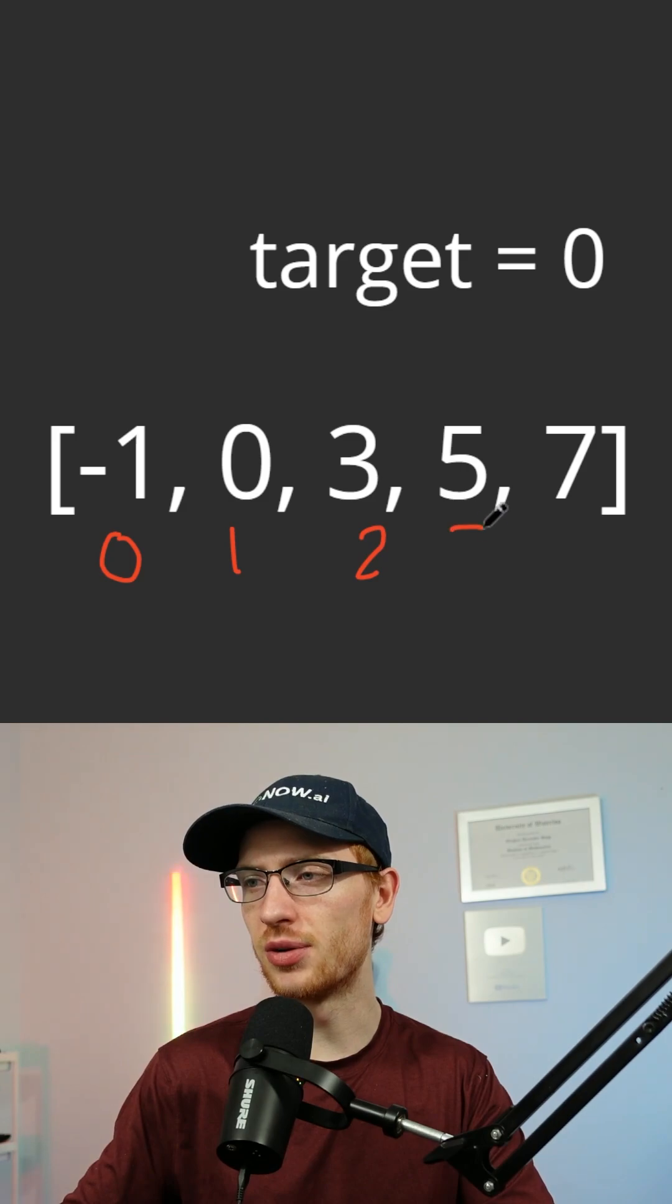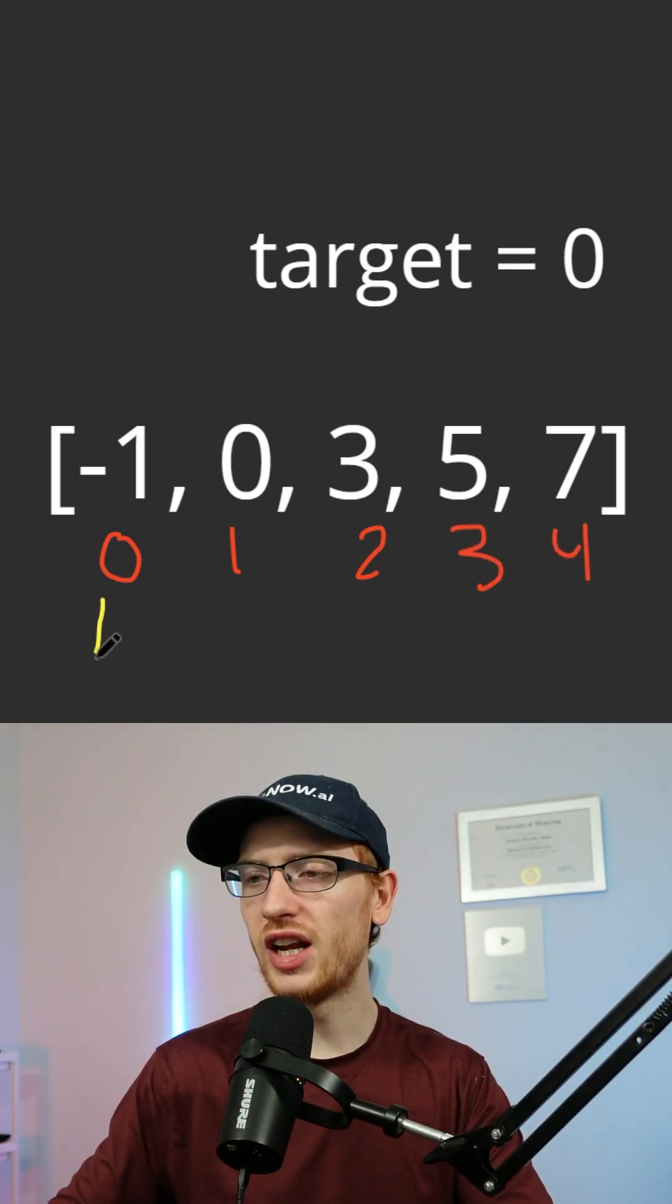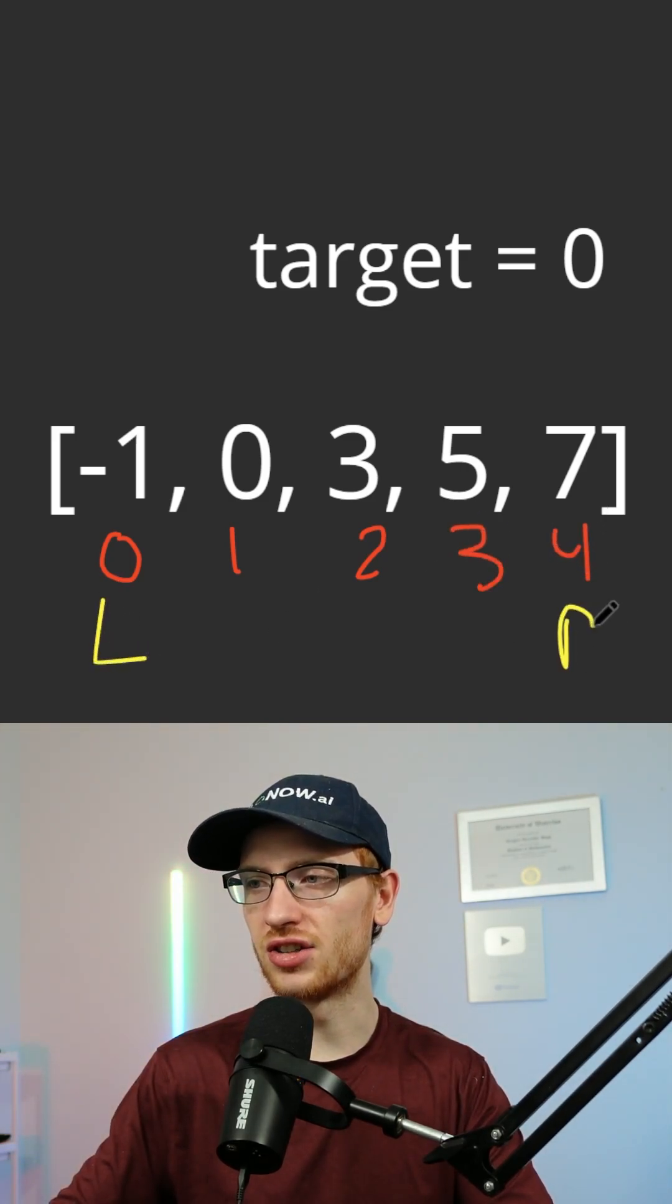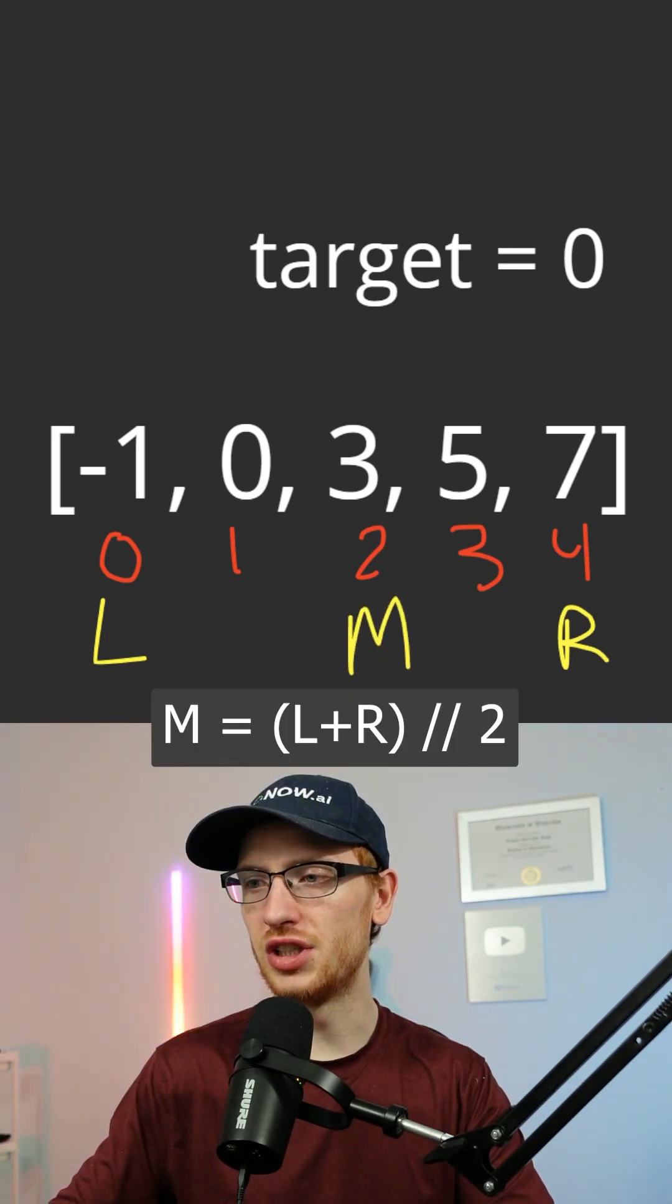If we have each of our indices from 0 to n-1, we'd get an index l at the beginning and an index r at the end. Then we'd iteratively calculate the middle, which is l plus r integer division by 2.